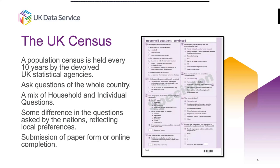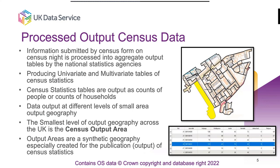In the old days the census form was always filled in on paper — you would get it on census day, fill it in and post it away. In recent years they've moved to doing it online. In England and Wales the census was done in 2021, and over the last year or so ONS have been processing all that census data submitted from the forms and building output data.